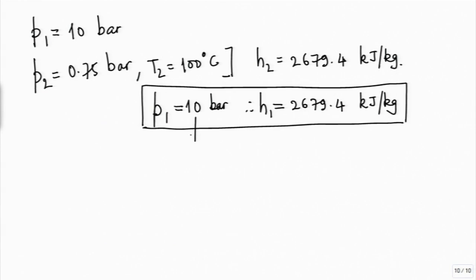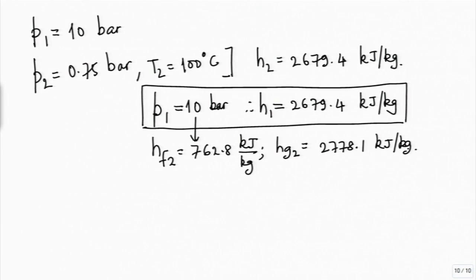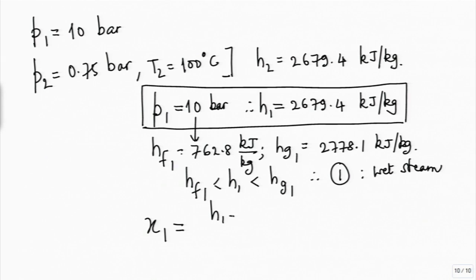Since P1 is already given as 10 bar, we go to the saturation table at 10 bar. At 10 bar, h_f is 762.8 kJ/kg and h_g is 2778.1 kJ/kg. We find that h_f < h1 < h_g, hence h1 lies between h_f and h_g, hence state 1 is wet steam. Once we decide it is wet steam, x1 can be calculated as (h1 minus h_f1) divided by (h_g1 minus h_f1).